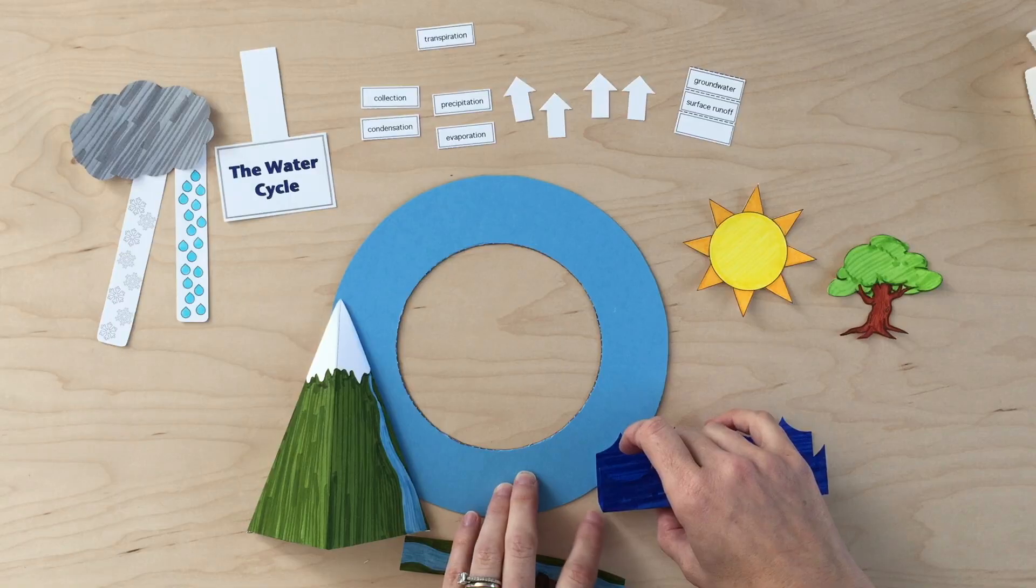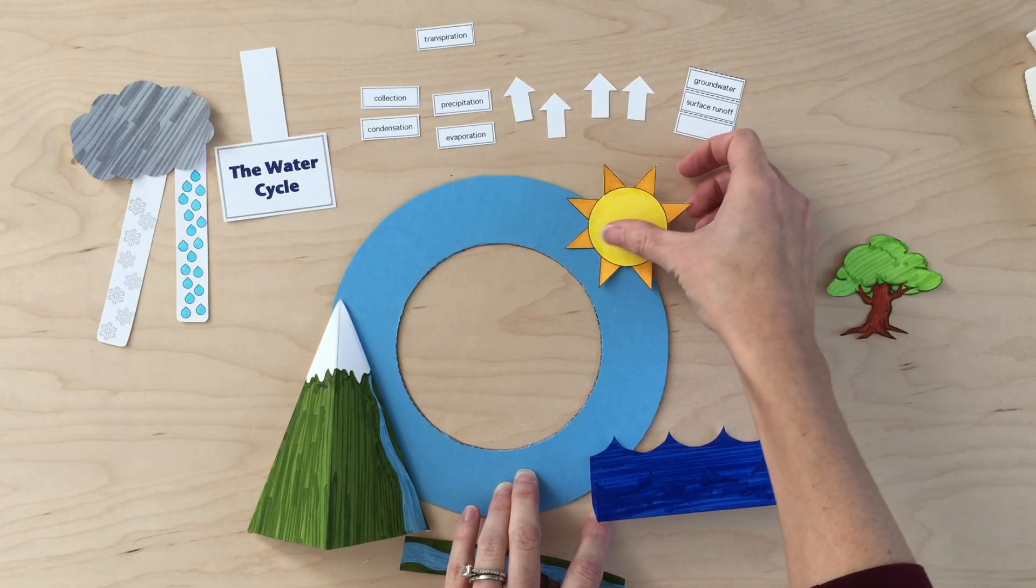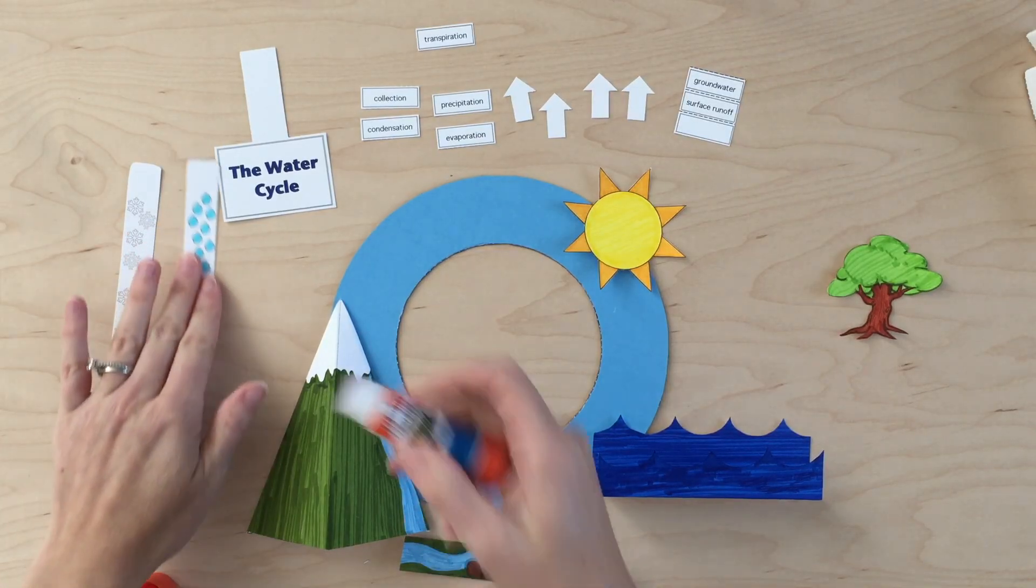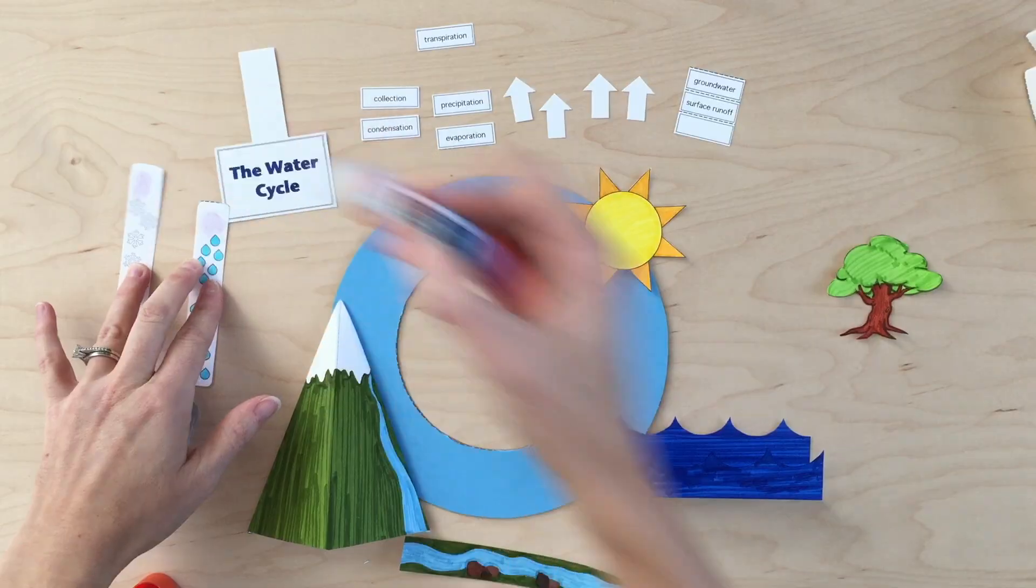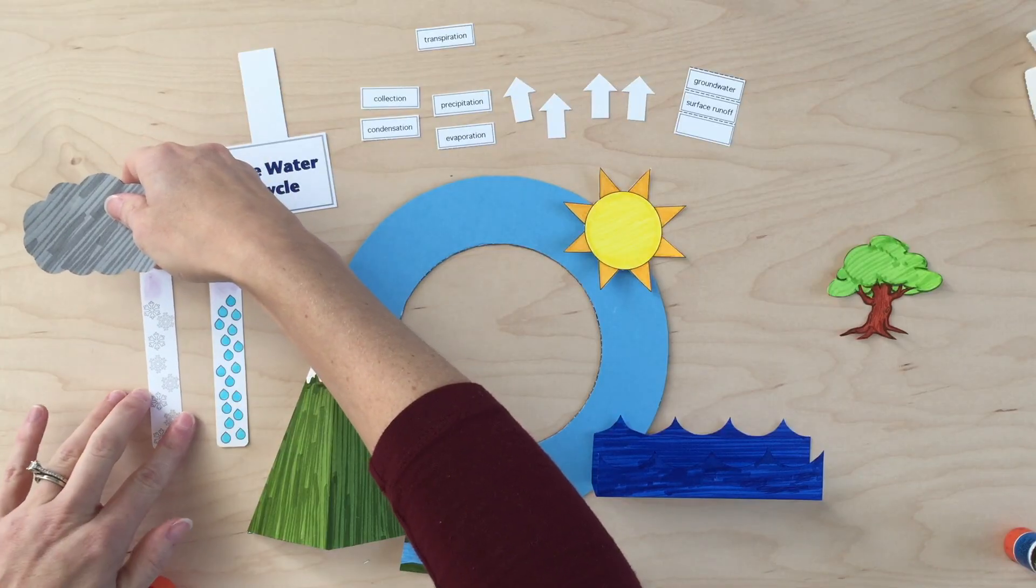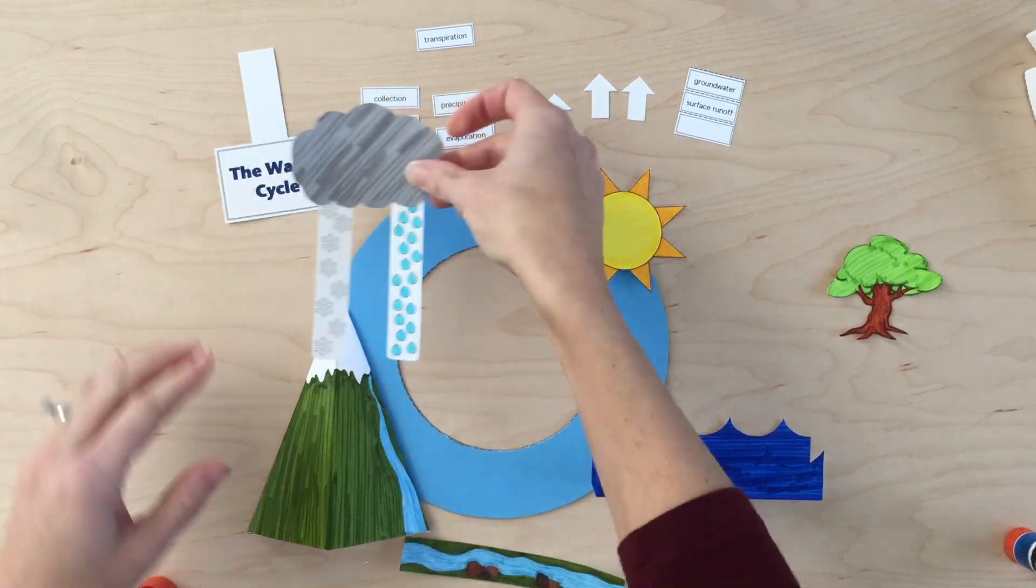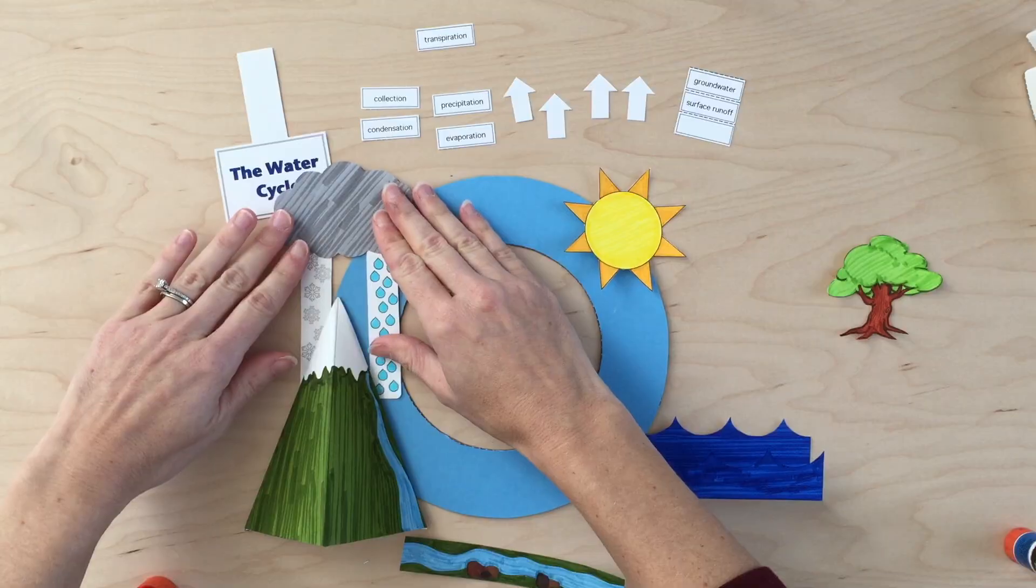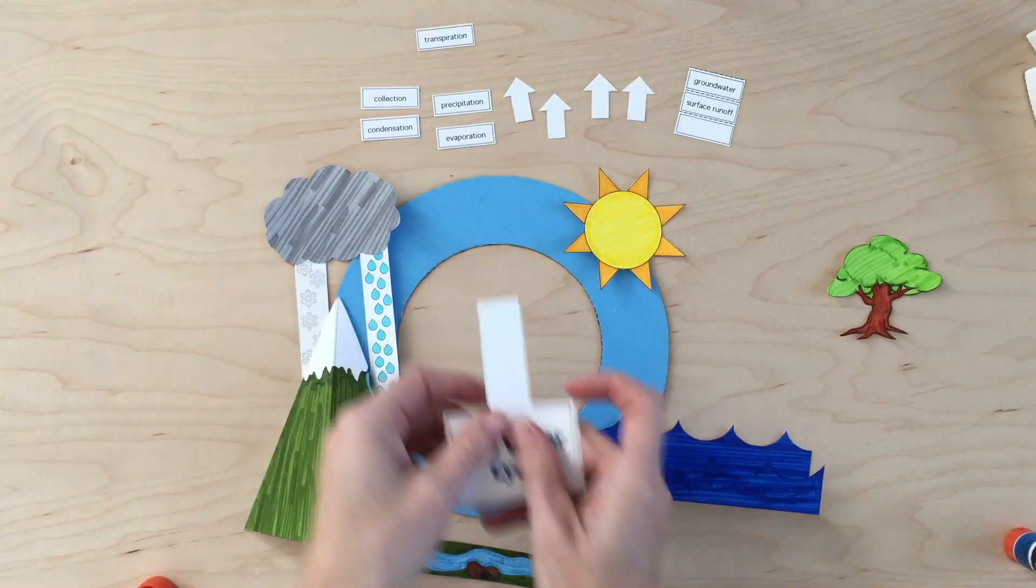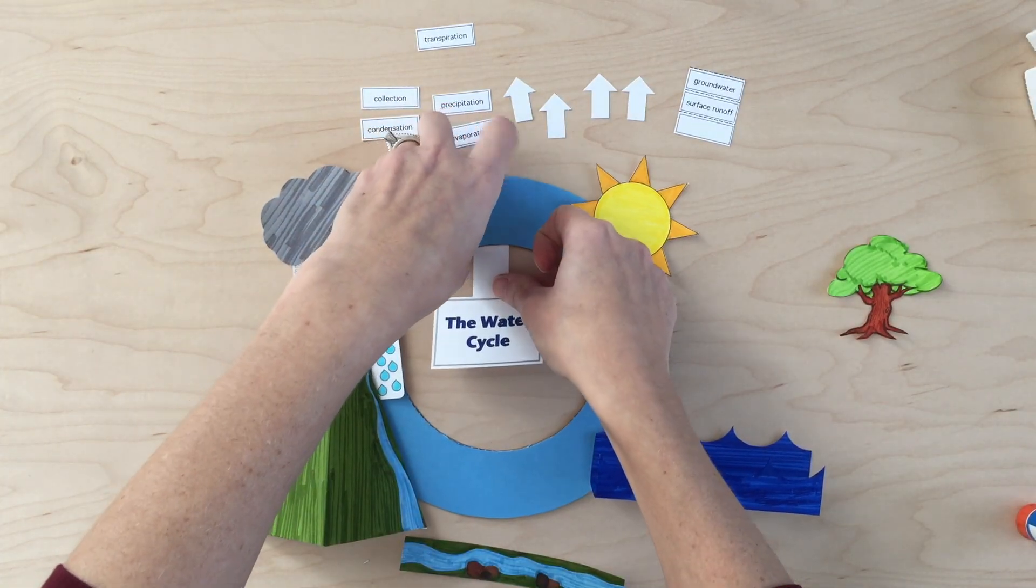The sun is going to be above the ocean. I'm going to go ahead and glue the raindrops and the snowflakes to the back of my cloud. They're going to go above the mountain like this. The glue can go right there. I'll go ahead and do that. Glue it to the back of your water cycle wheel.